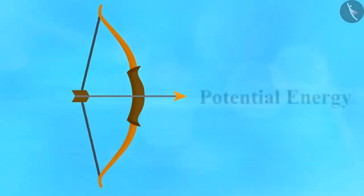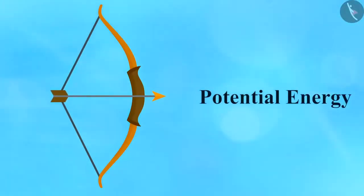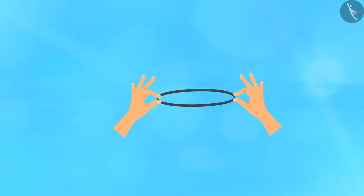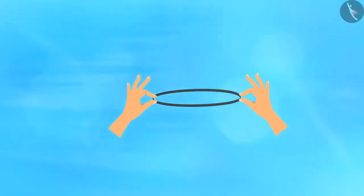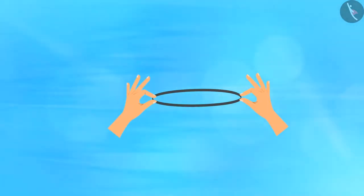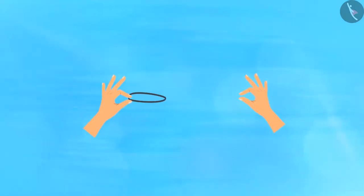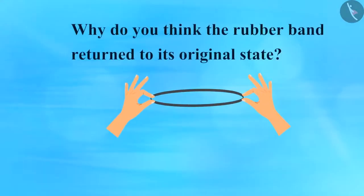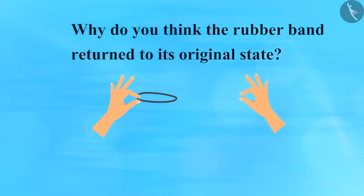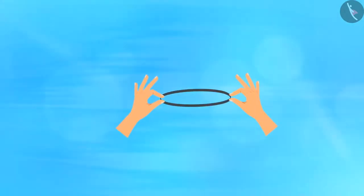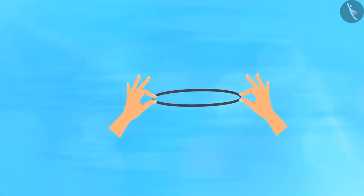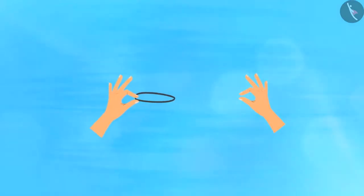Now let us have a look at some simple examples to understand potential energy. Hold a rubber band in one hand and pull the band with the other — the rubber band will get stretched. Now release the rubber band from one end and you will see that the band returns to its original state. Why does the rubber band return to its original state? It is because the band acquired energy when it was stretched, and this energy causes it to return to its original state.